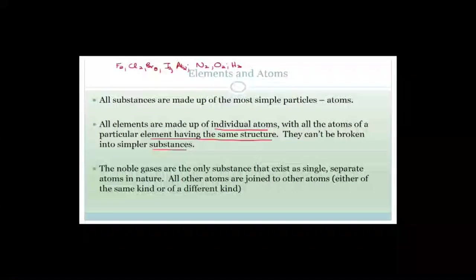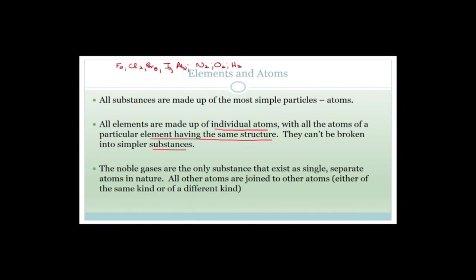Even if you think about metals — metals are joined up with other metallic atoms to form a metal lattice. So the metal isn't just by itself. You need to understand that the noble gases, because they are so perfect in their atomic structure, are the only substances that exist as single separate atoms in nature.